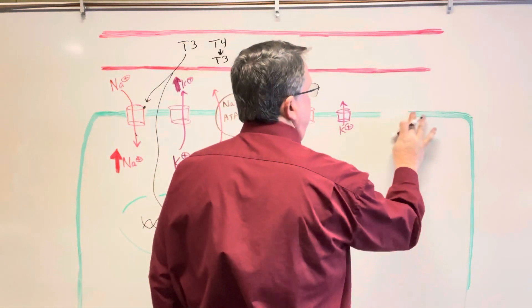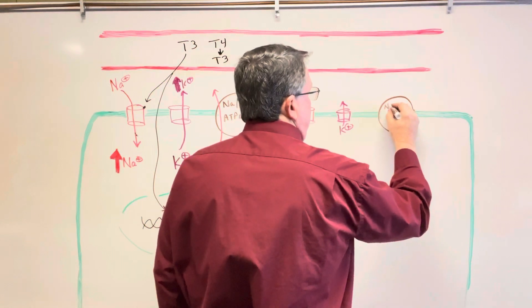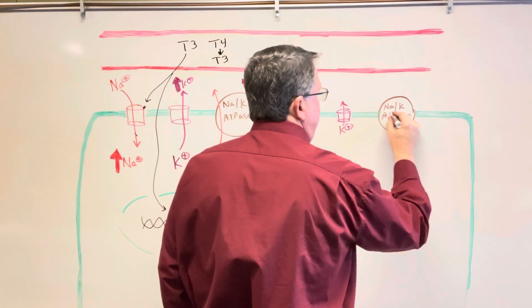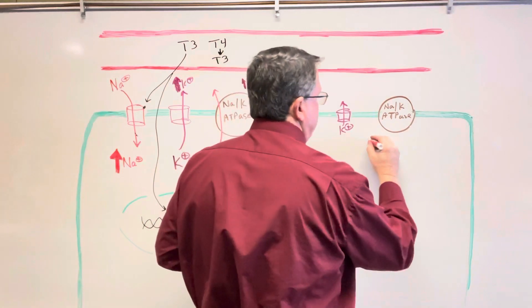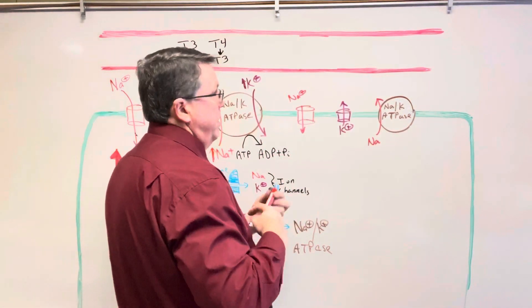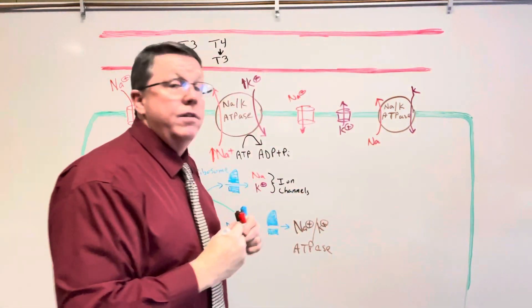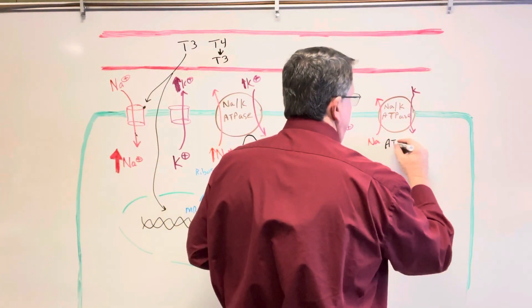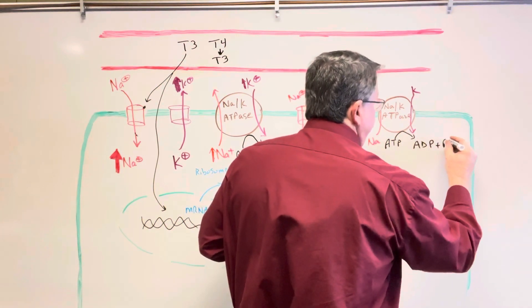That sodium-potassium ATPase is going to go into my plasma membrane. It's going to start pumping sodium out and pumping potassium back in, just like we saw before. This also needs to use ATP — it needs energy to do this — and it's going to convert ATP to ADP.